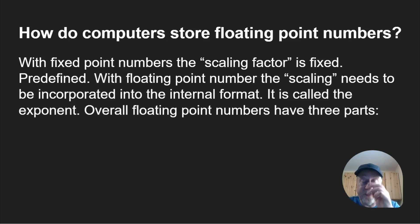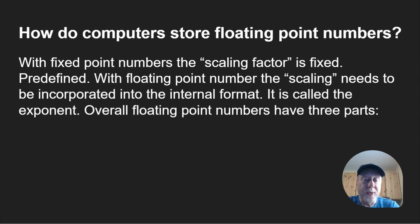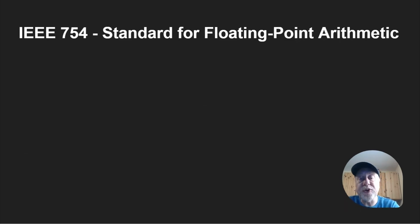So how do computers store floating point numbers? With fixed point numbers there's a hard-coded scaling factor — as in the last video, you could be dealing with a scaling of 10 or 100, and that's predefined. With floating point numbers, because it's not predefined, the point floats and the scaling needs to be incorporated into the format as an exponent, which tells you how much to multiply left or right. So a floating point number has three parts: the sign (positive or negative), the exponent, and the fraction.